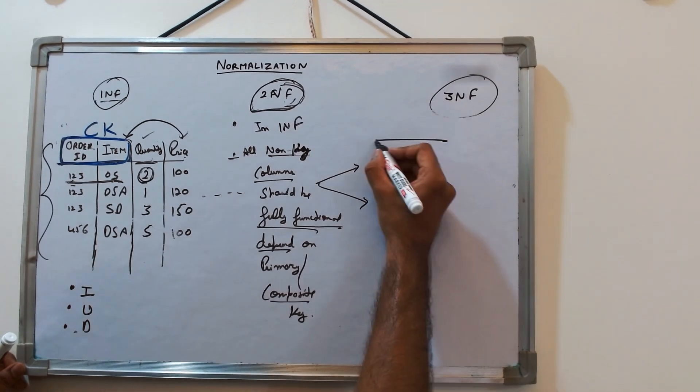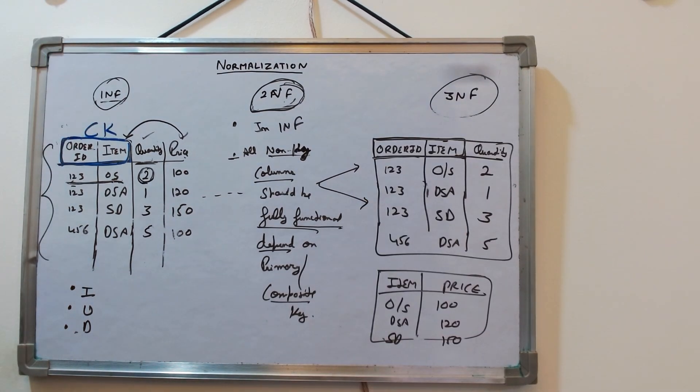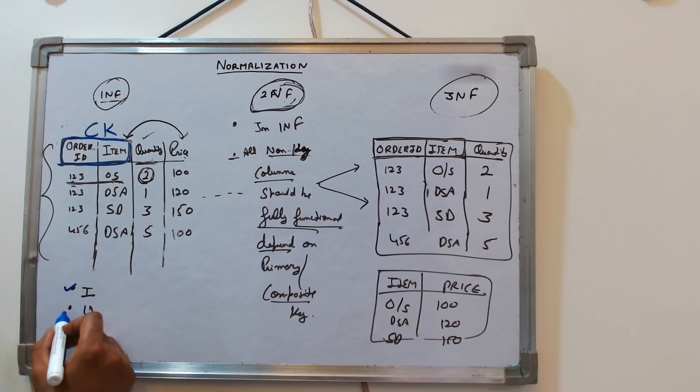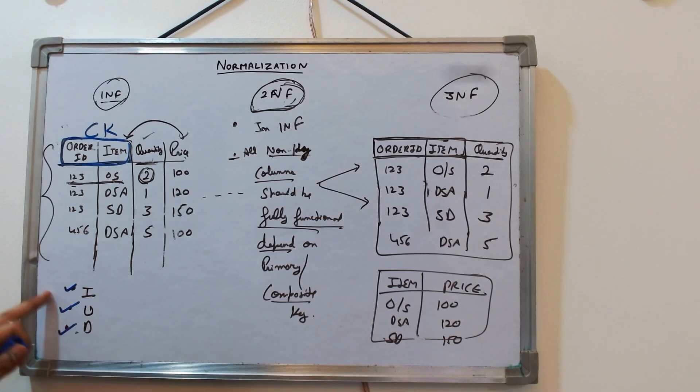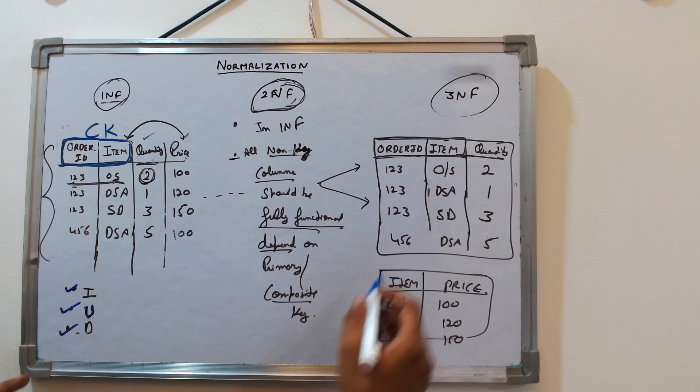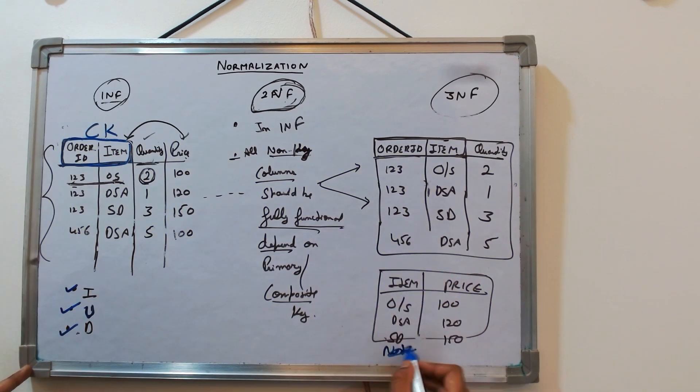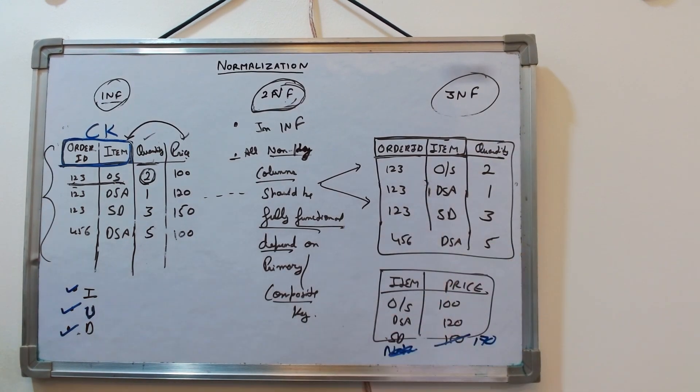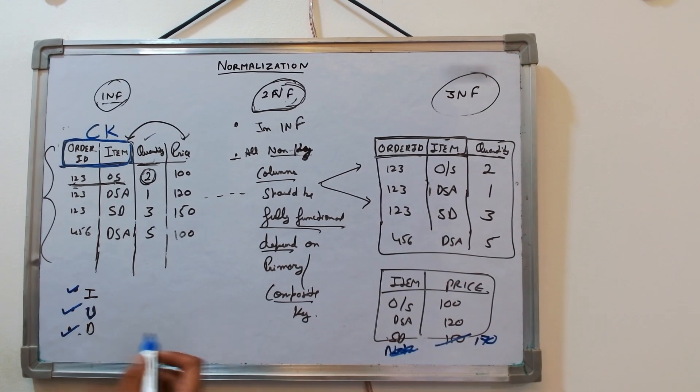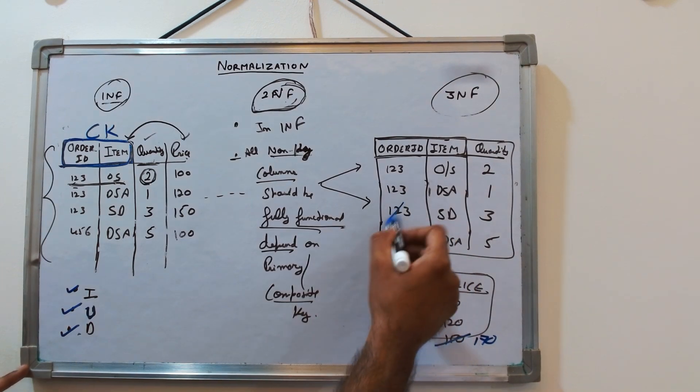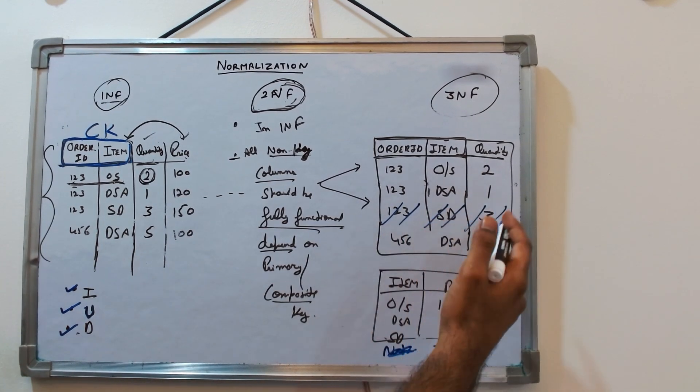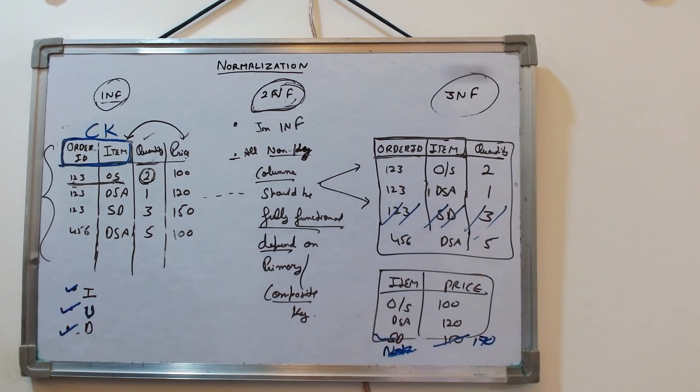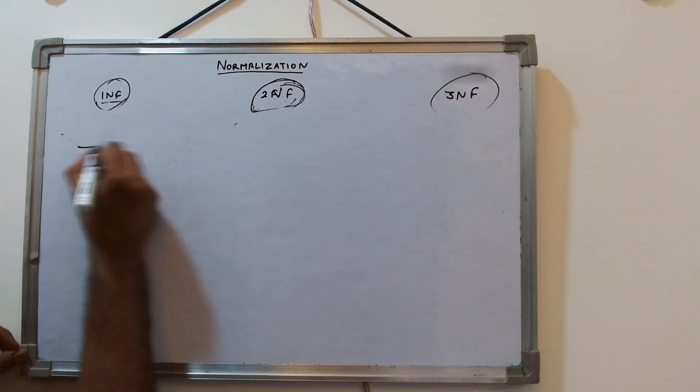So we can divide it like that. Now here if you say that all the three anomalies—insertion, updation, deletion—are solved. If I want to add networking here, you can simply add it, you don't have to wait for an order. If you want to update it, let's say update the price of SD from 150 to 170, you can easily do it without affecting the existing orders. And also if you want to delete a particular order, you do not lose any data, system design is still there.